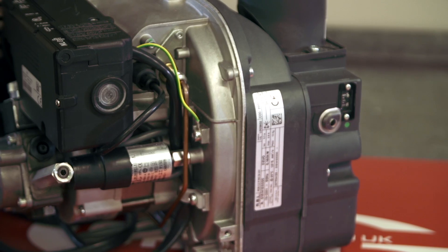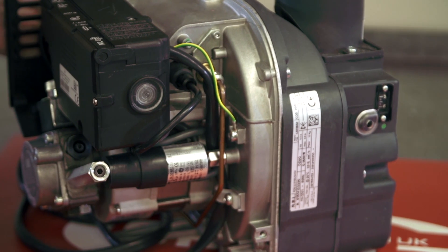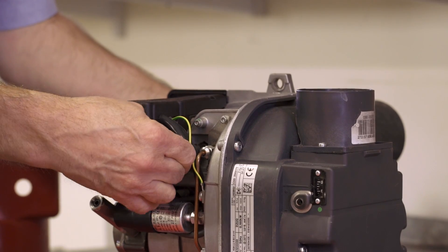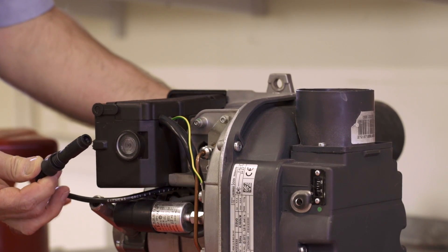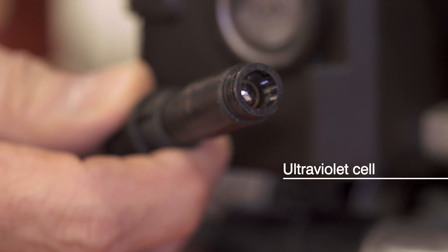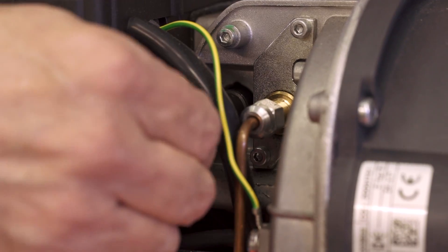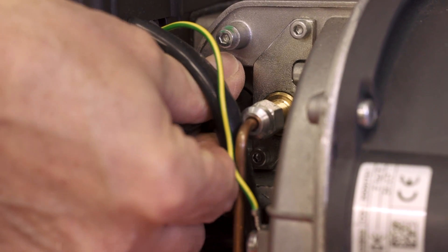The photocell is in the same position, but this burner uses an ultraviolet, or UV cell, instead of the photoresistor more commonly used. This is used because the blue flame on this burner can't be seen by the usual photocell.